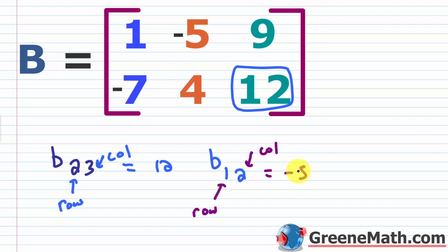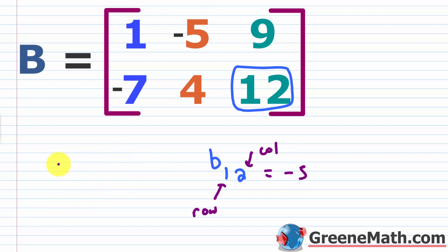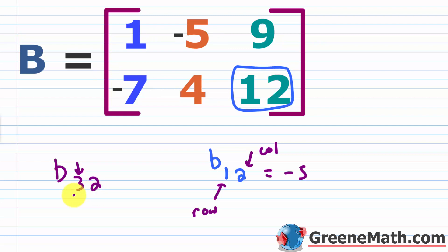Suppose we're asked for b sub 3,2. Well, this matrix only has two rows, so there is no third row — even though there is a second column. So this element does not exist. They might give you this as a trick question, so you would simply write 'does not exist.'